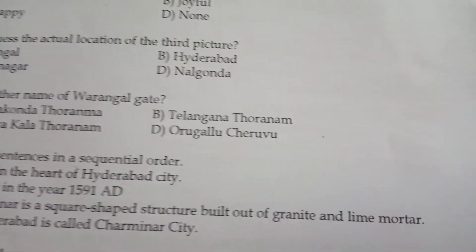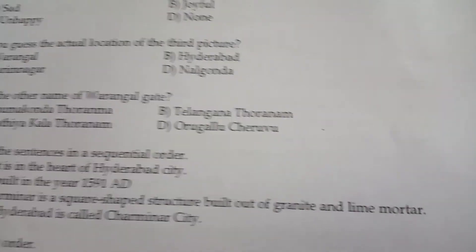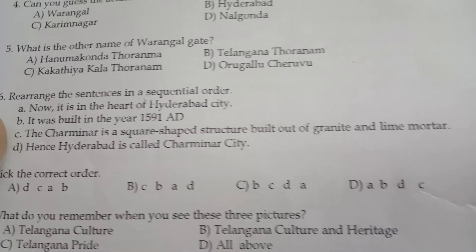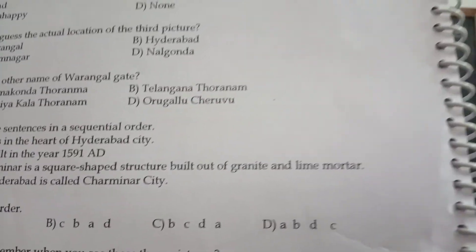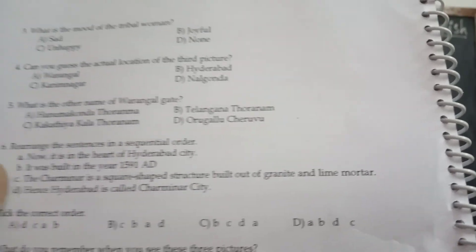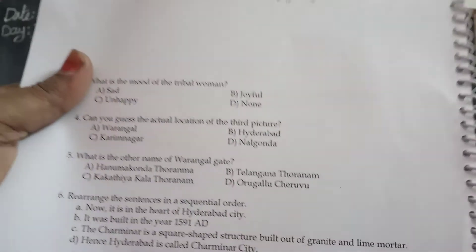Can you say what is the other name of the Warangal gate? It is Hanamkonda, Toranam, Telangana Toranam, Kakatiya Kala Toranam, Orugallu. We call Warangal also Orugallu. Slowly, Orugallu began to become Warangal.